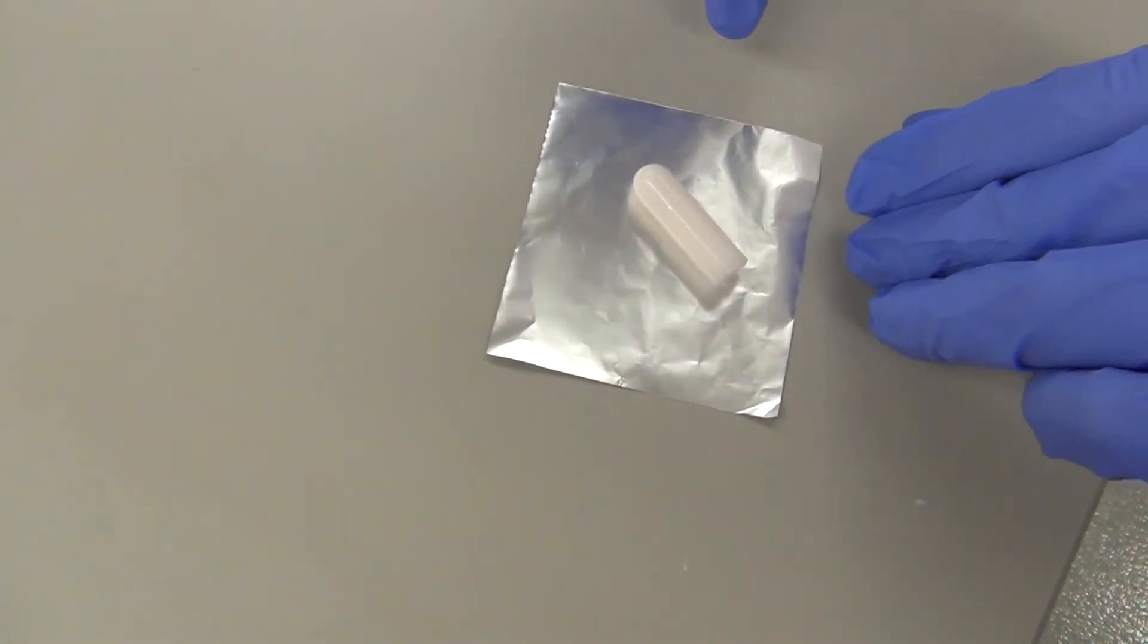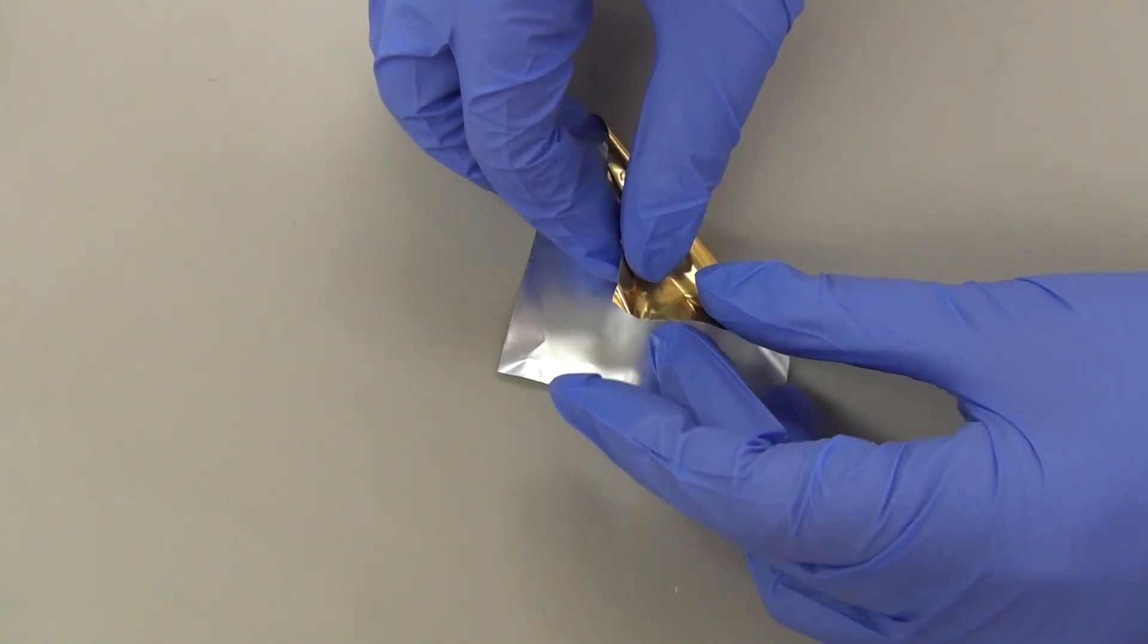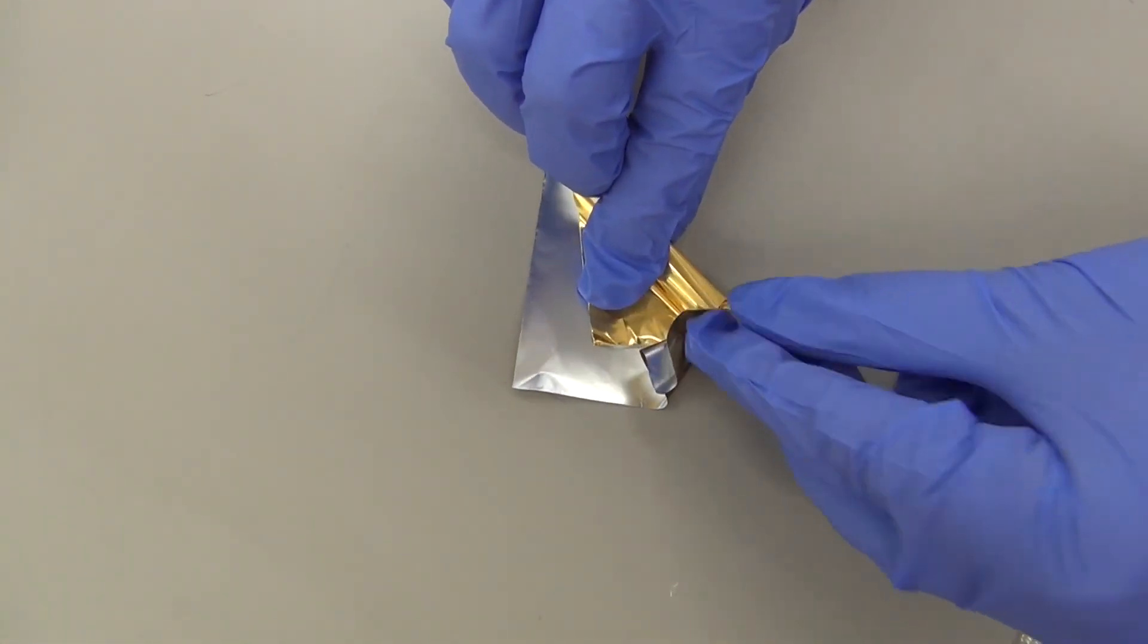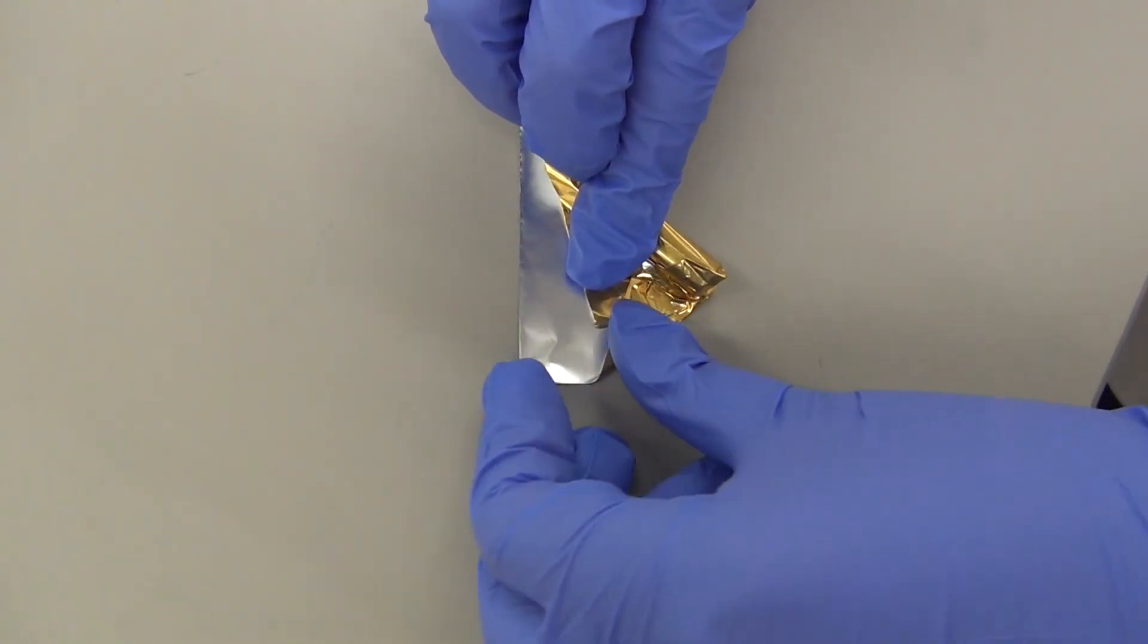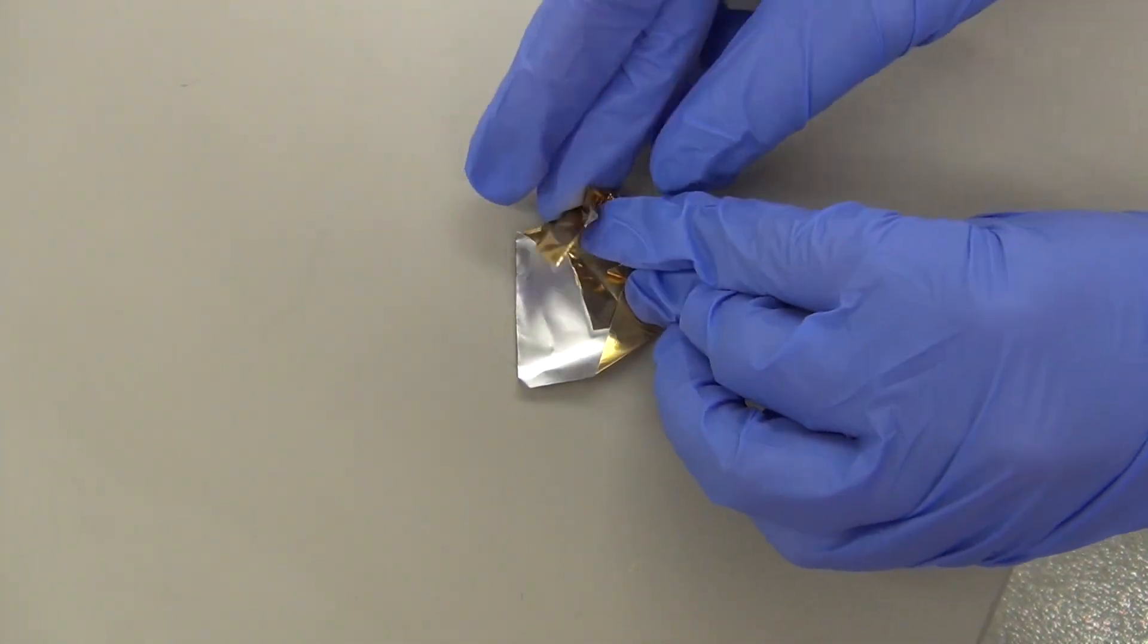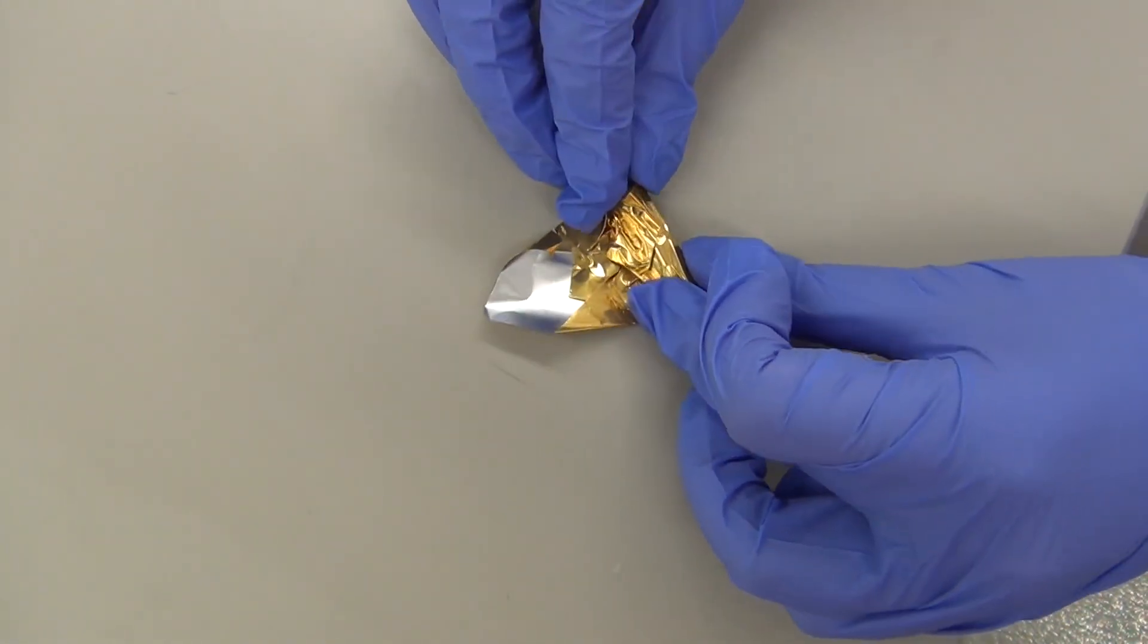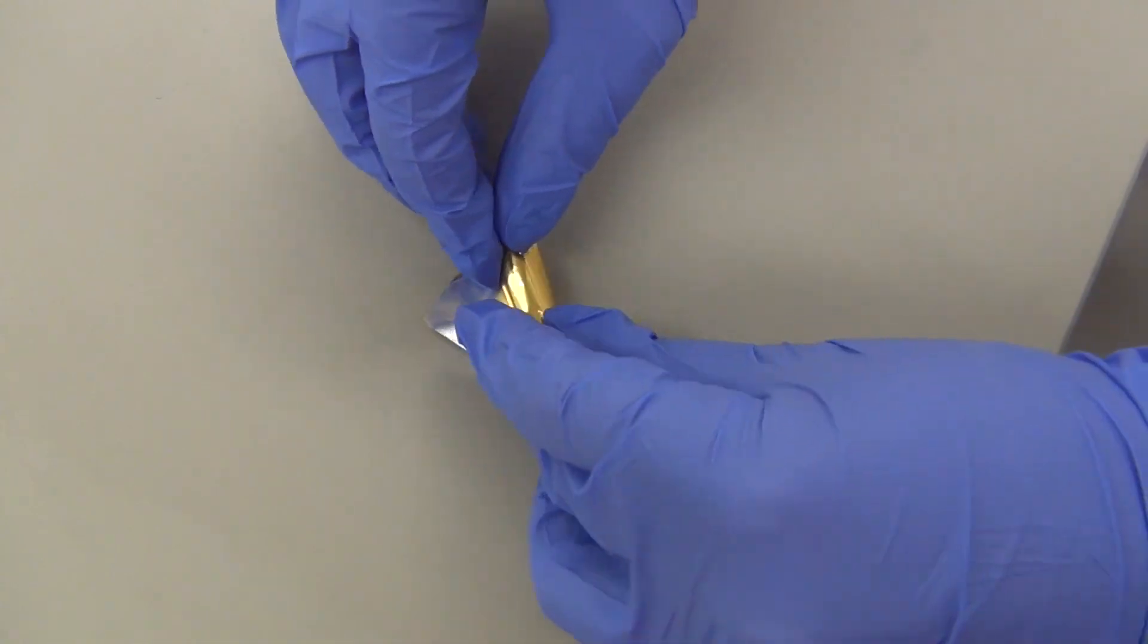Now we will show you a demonstration on how to wrap a suppository. Place your suppository into the foil and fold the foil slightly before the halfway point. Fold in the ends of the foil. Go ahead and roll the rest of the suppository using the remaining foil.